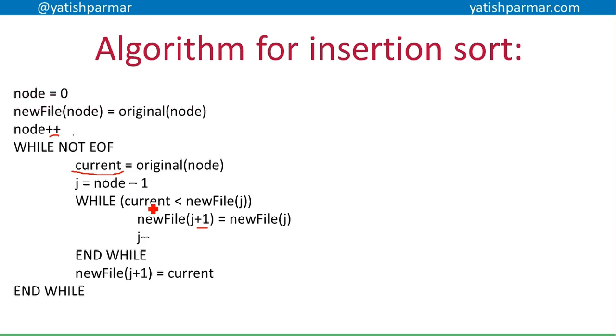Because now if I've moved everything along and my current item is now smaller than the one I want to put in, I can pop it into place. And then by doing my new file j plus one is now equal to current, and then I exit that loop.